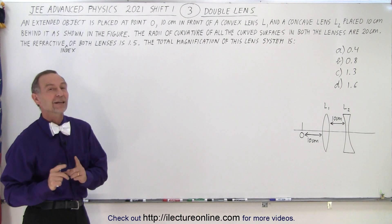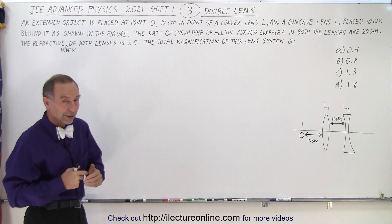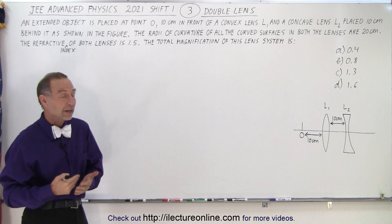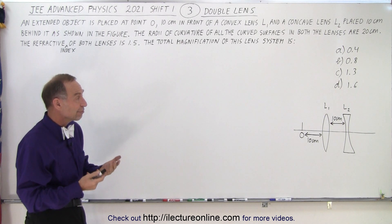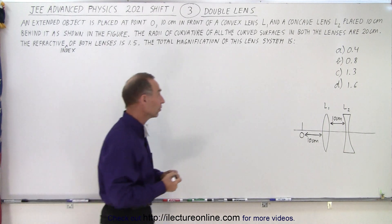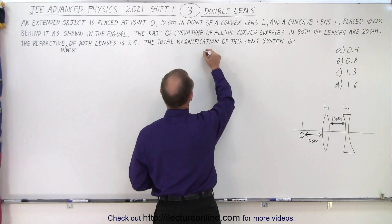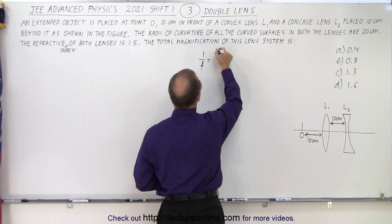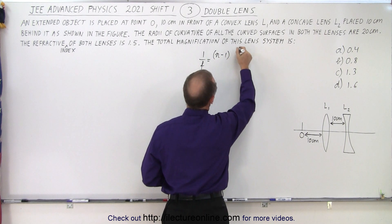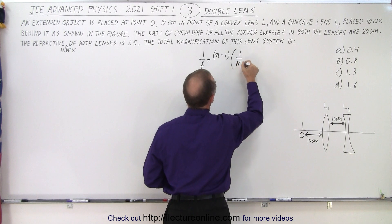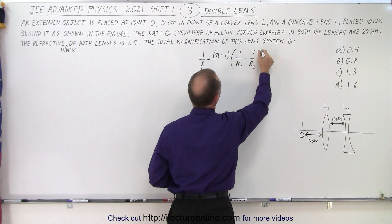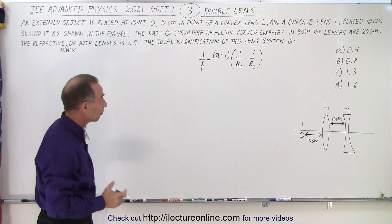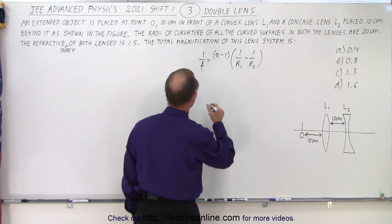They did not give us the focal length of the lenses, which would have made it easier. We first need to use the lens maker's equation to find the focal length of both lenses. That equation goes as follows: 1 over f equals n minus 1, times 1 over R1 minus 1 over R2. That's how we find the focal length of both lenses.